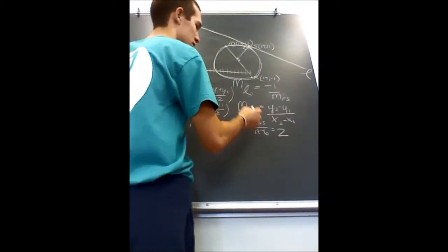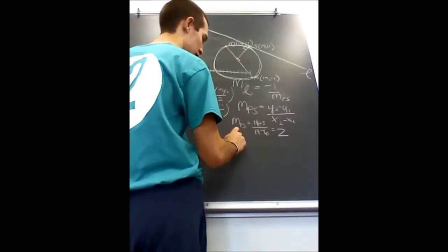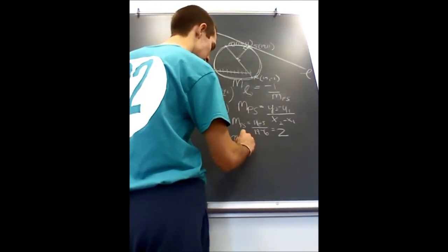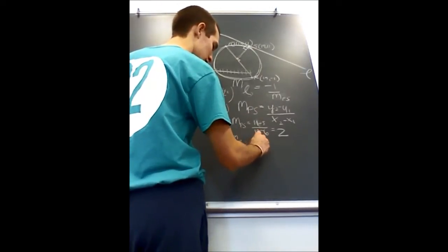That means that the slope of line L would be equal to negative 1 half.